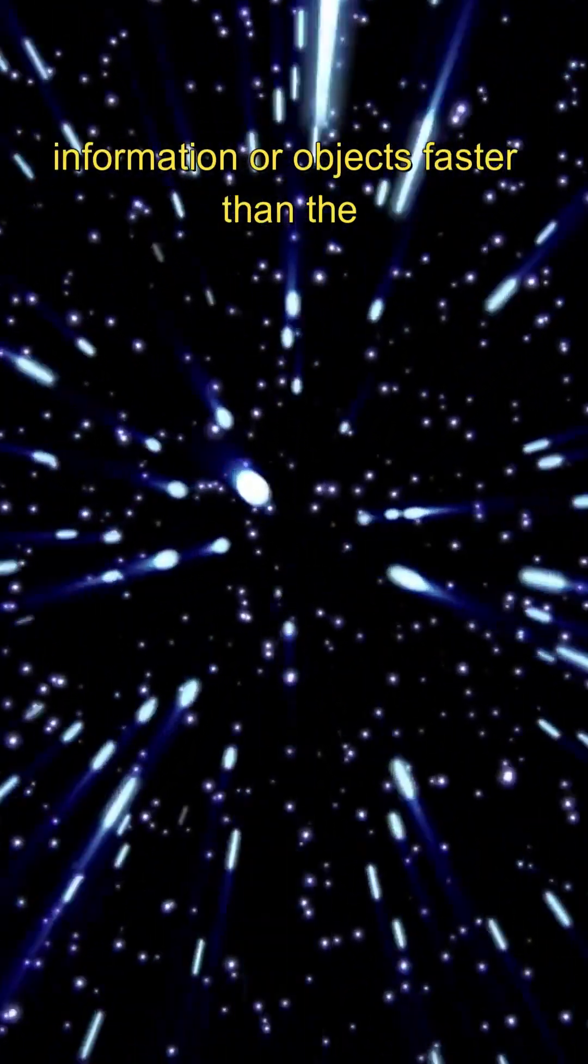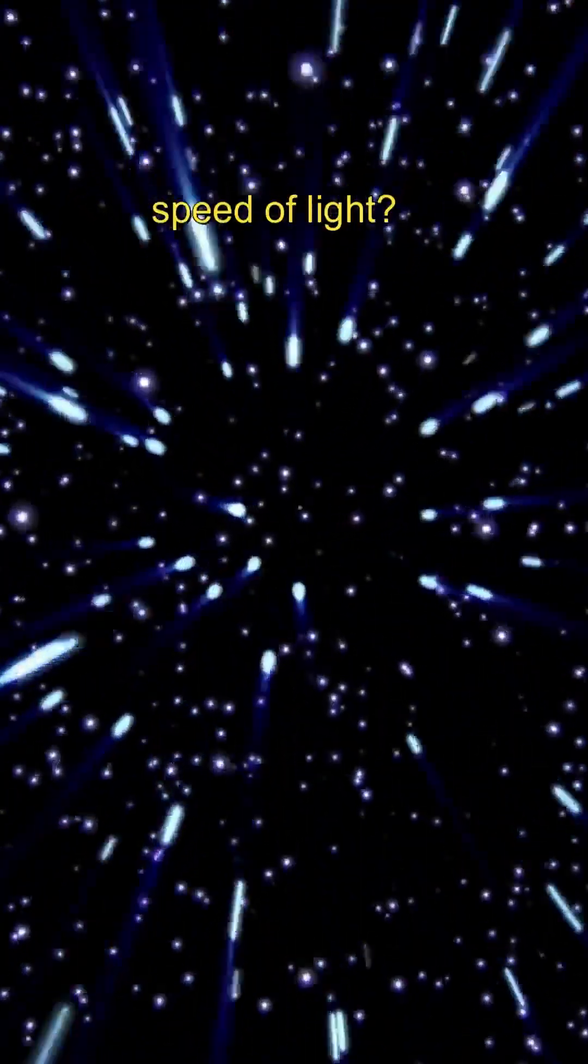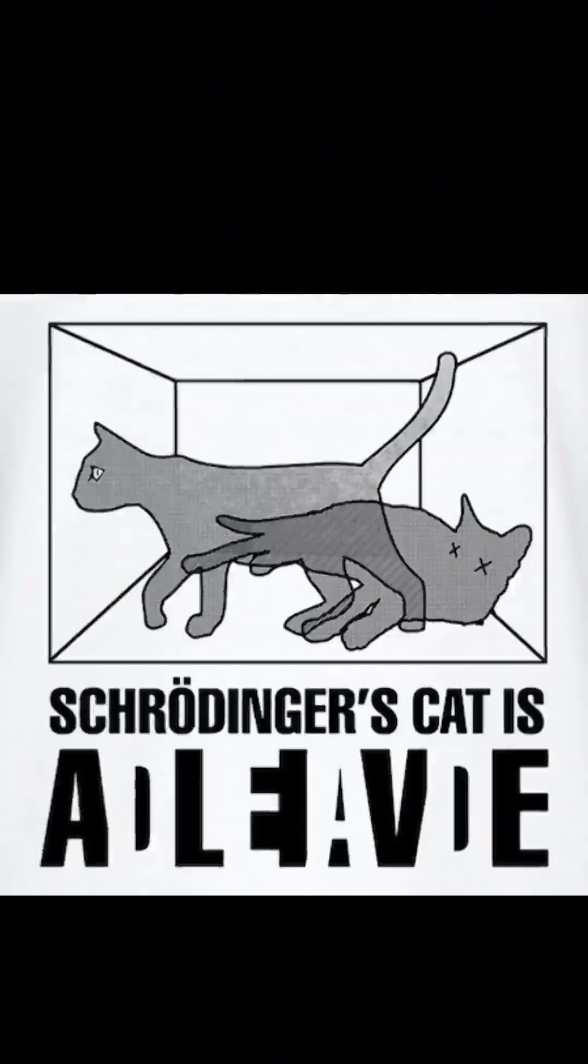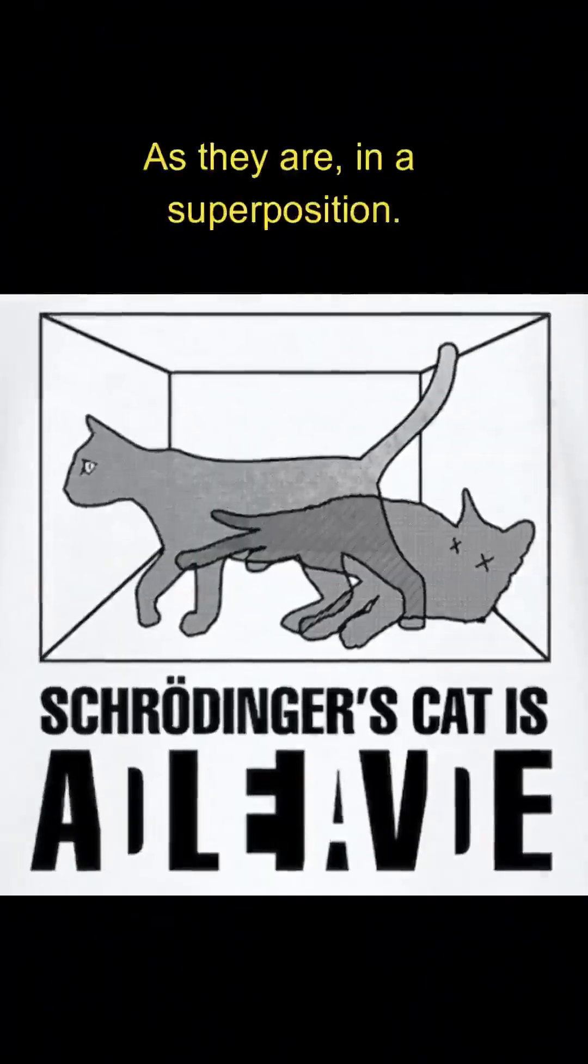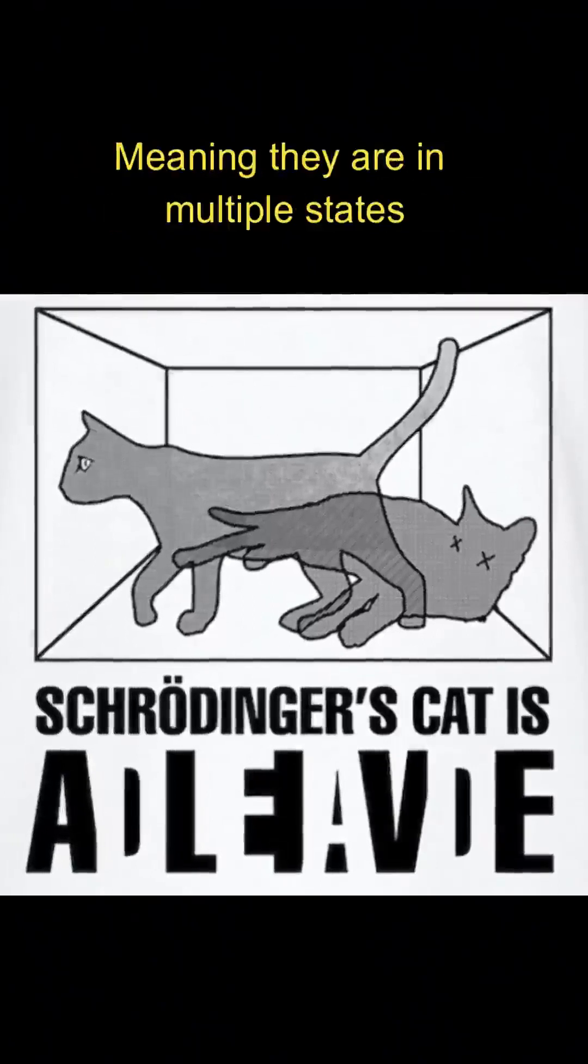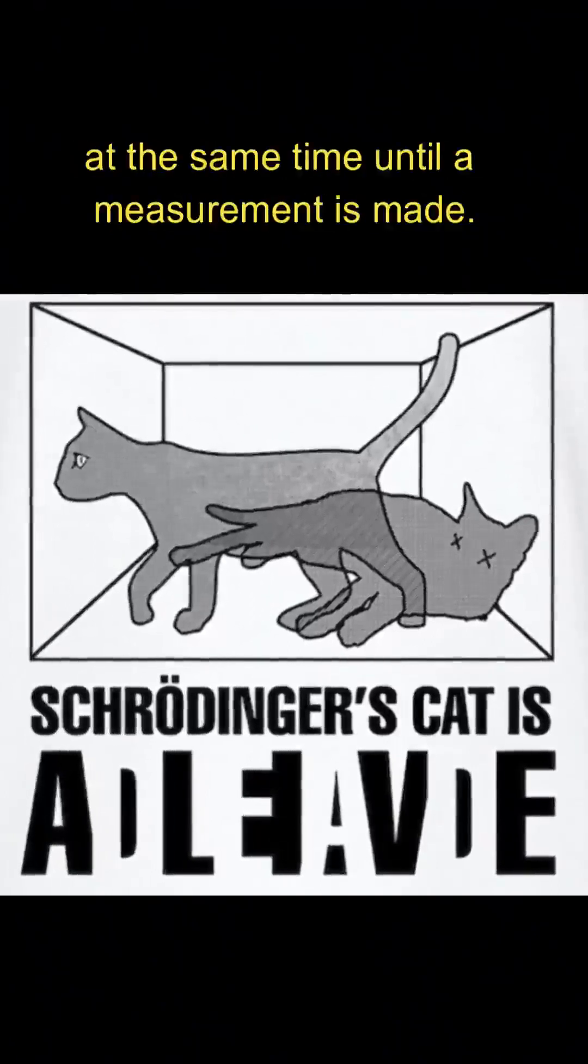Can we use these properties to send information or objects faster than the speed of light? The answer is no, because we can't control the state of entangled particles beforehand, as they are in a superposition, meaning they are in multiple states at the same time until a measurement is made.